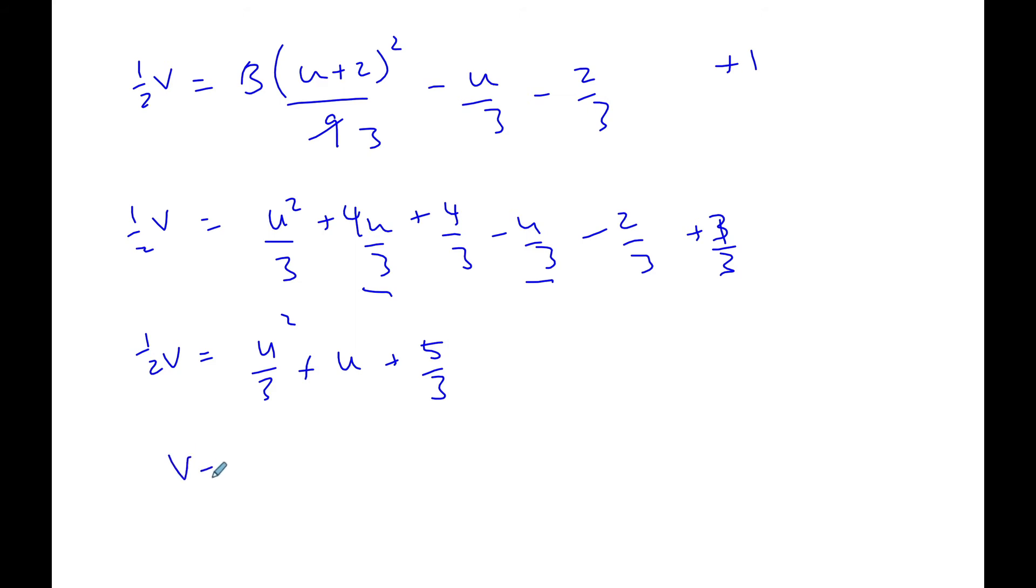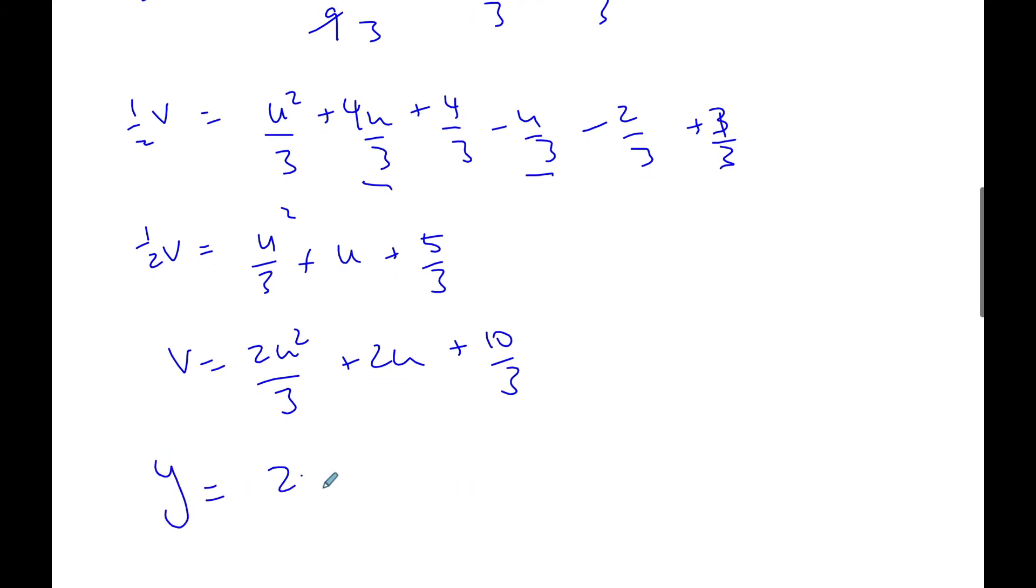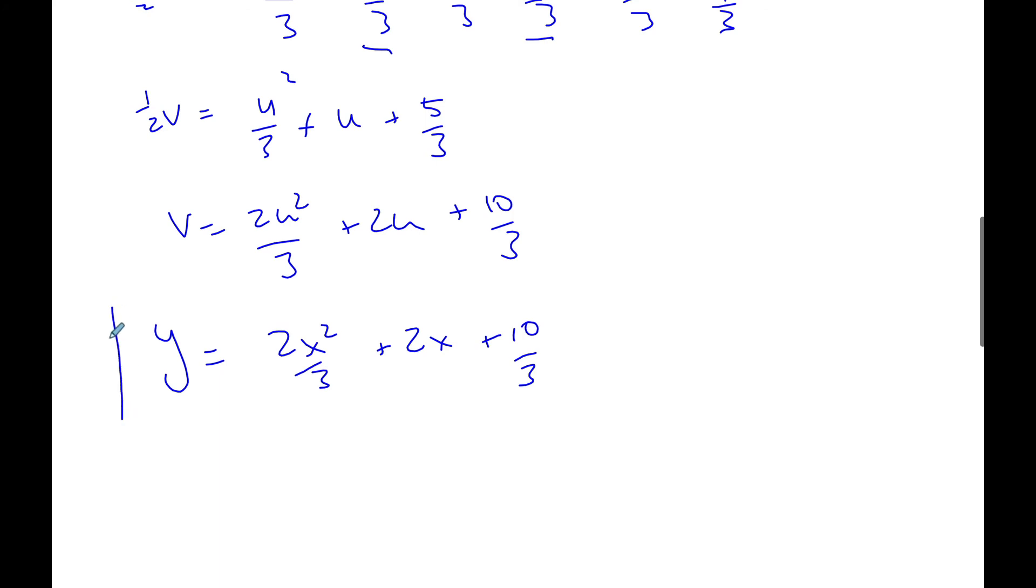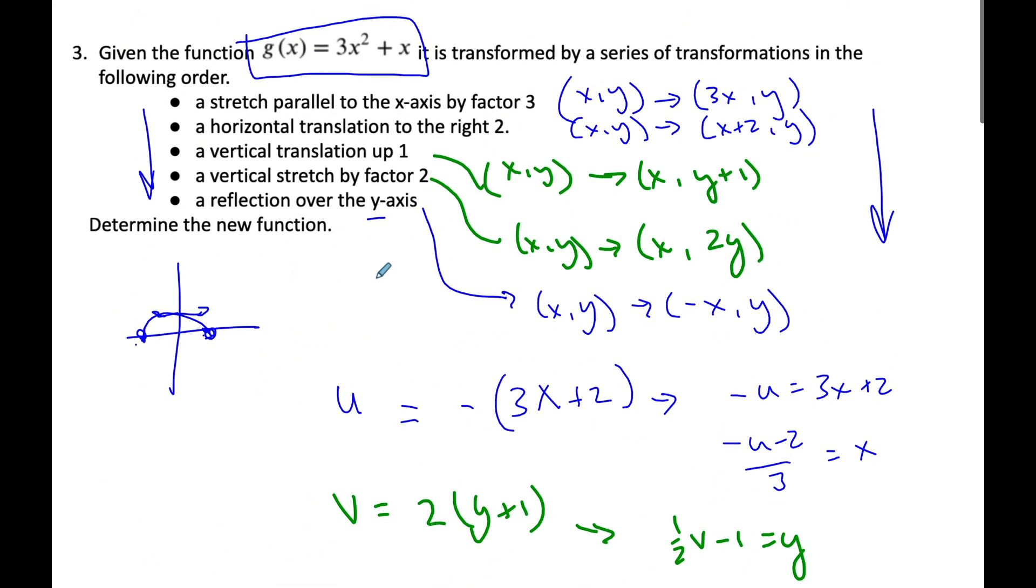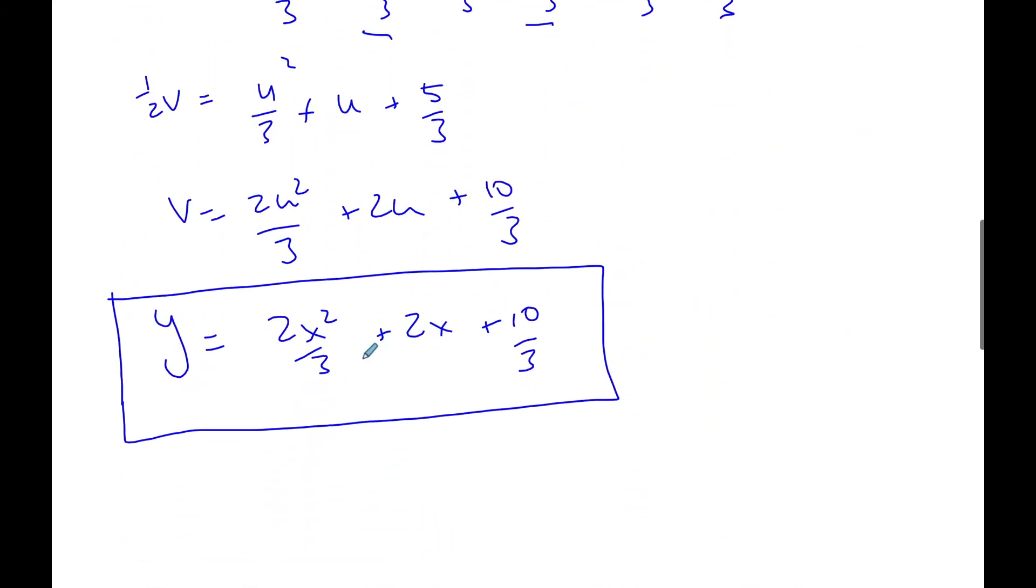Plus a 3 thirds plus a 3 thirds is going to be plus 5 thirds. Multiplying by 2, v is equal to 2u squared over 3 plus 2u plus 10 over 3. And so I know my equation is going to be 2x squared over 3 plus 2x plus 10 thirds. And this is my new transformed equation.